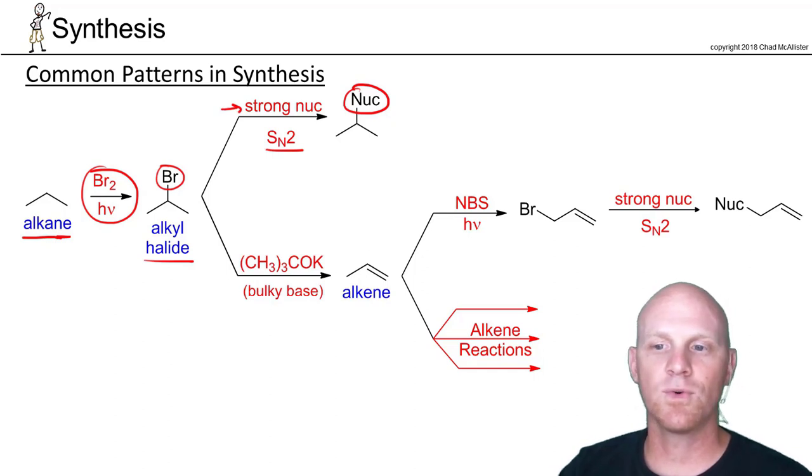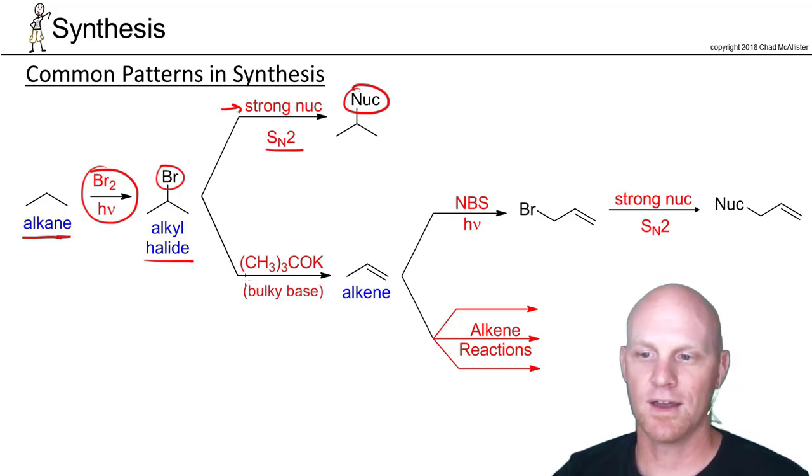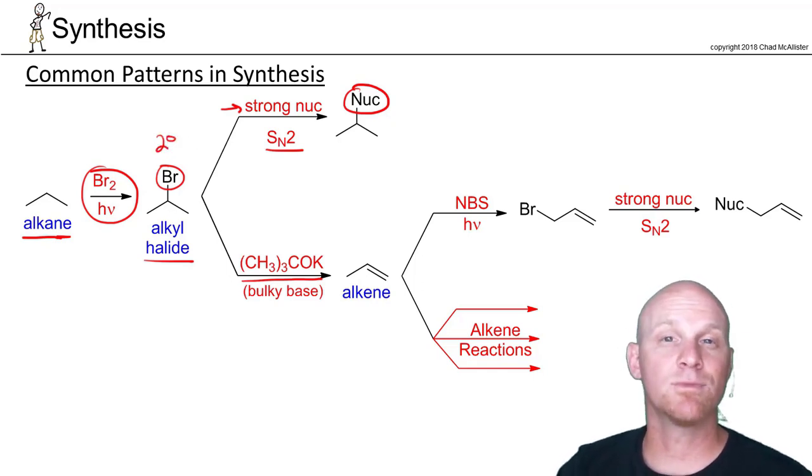But even more common than that is probably doing some elimination here using the bulky base with a secondary halide. With a secondary halide, a non-bulky base might do both SN2 and E2, probably more likely to do E2 than SN2. But if you want to make sure that you're only doing E2, that's when you'd use the bulky base, because SN2 largely is not going to happen.